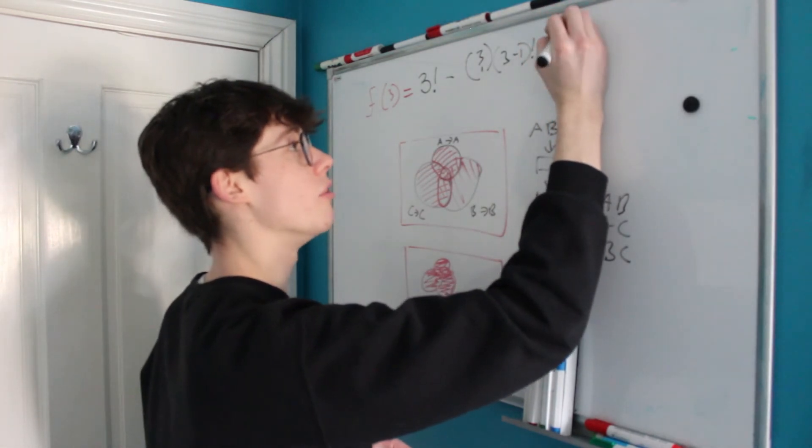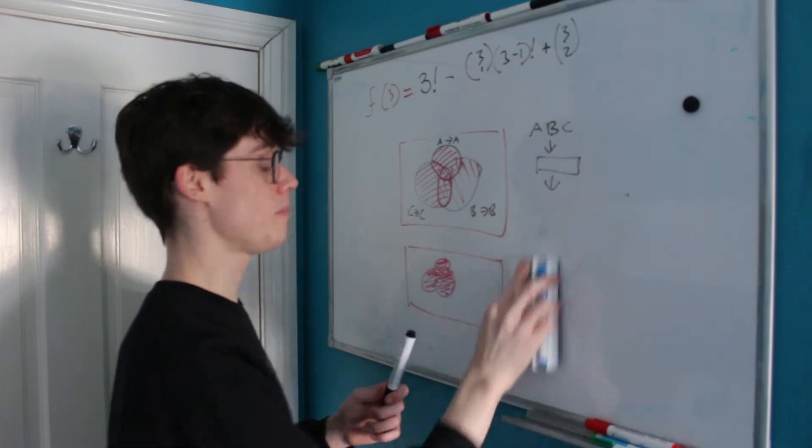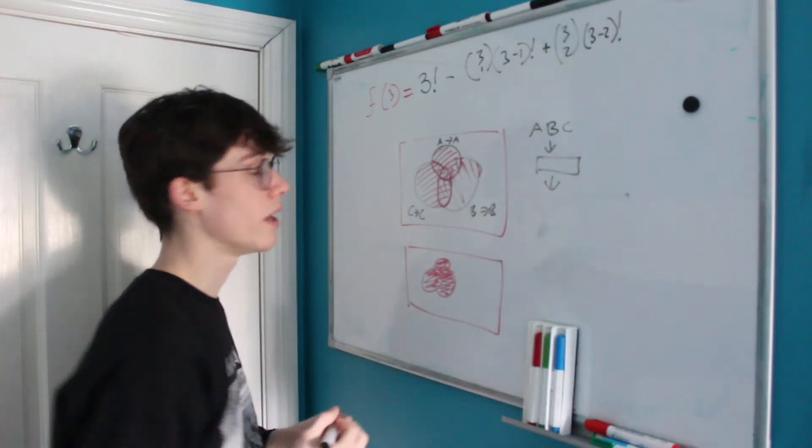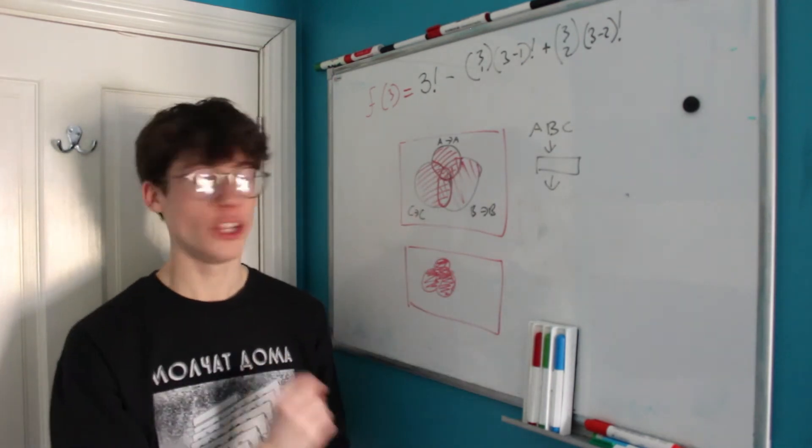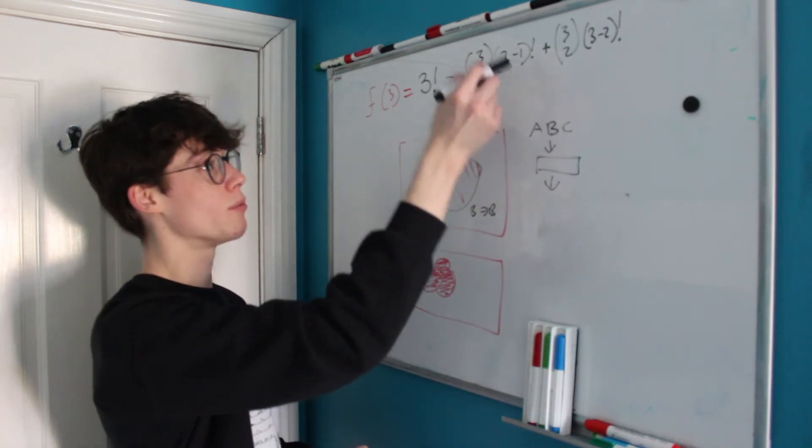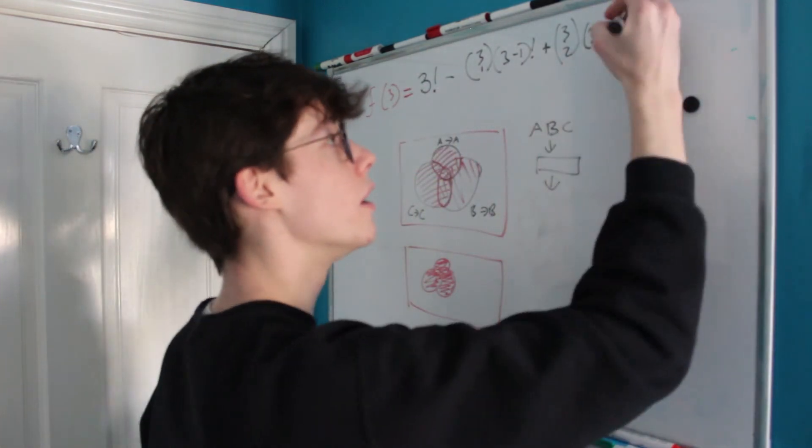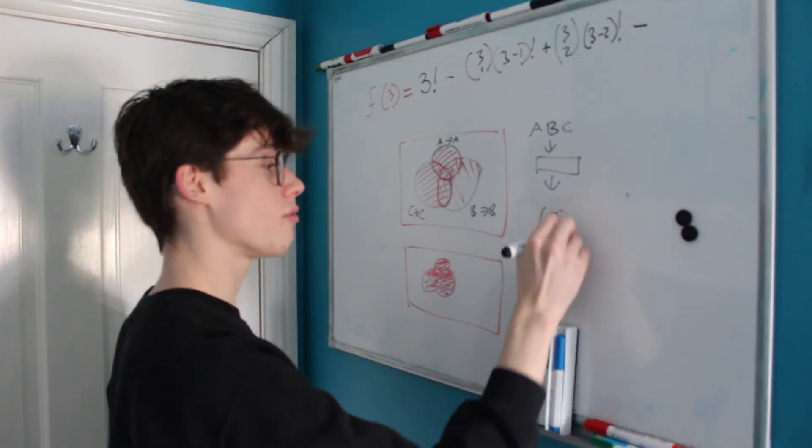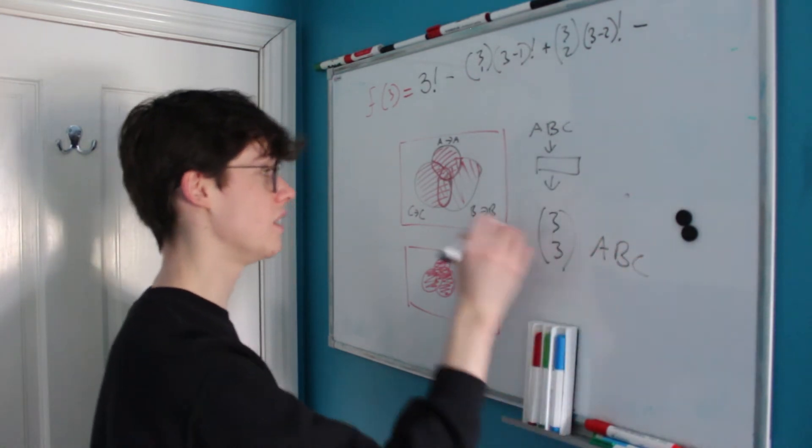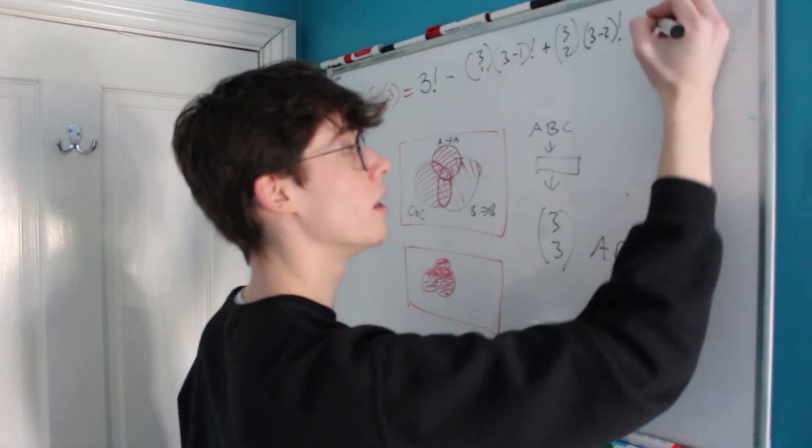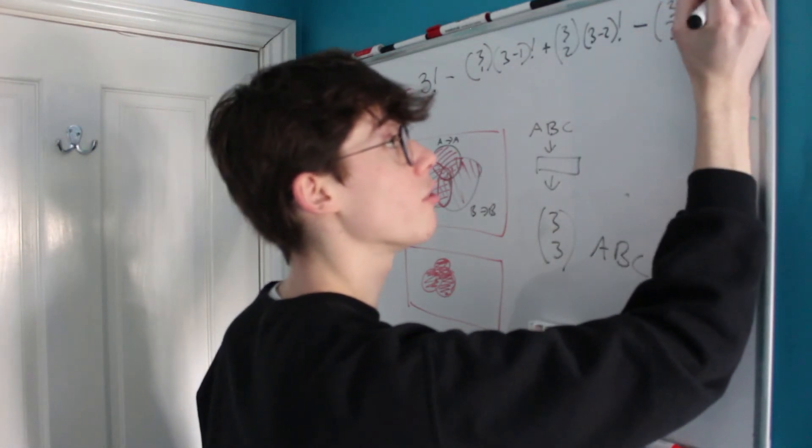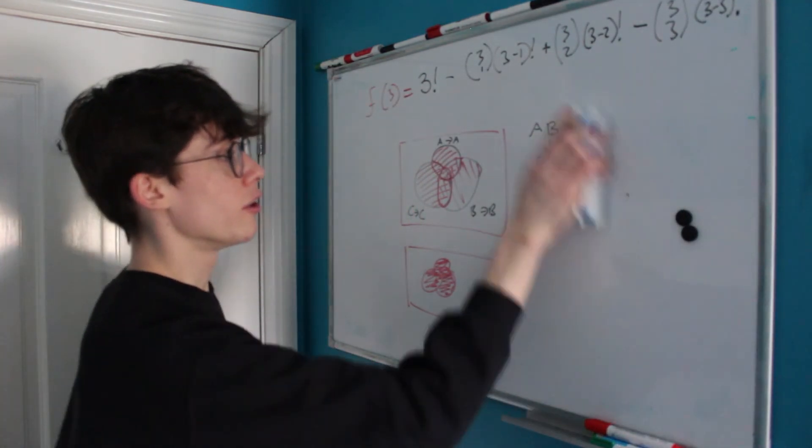So we're going to be adding something back in with a coefficient of 3, 2 from Pascal's triangle and then we only have one letter left that we have to arrange once we fixed two so it's multiplied by 3 minus 2 factorial. And there's one final thing that we need to consider and that is the center, the union of all three of our circles. We've got to subtract 3 choose 3 and there's no letters left that we need to rearrange at the end so we end up with 3 minus 3 factorial which is 0 factorial.